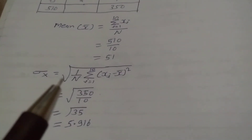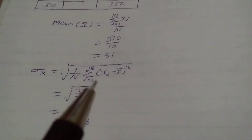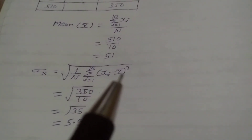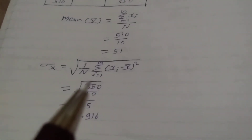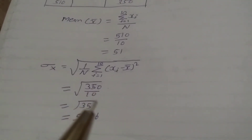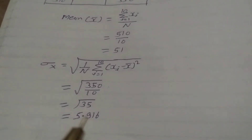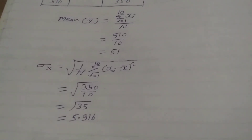Standard deviation of X equals root of 1 upon capital N, summation from i=1 to 10 of (Xi minus X-bar) whole square. Putting in the values: equals root of 350 upon 10, equals root of 35, which equals 5.916.